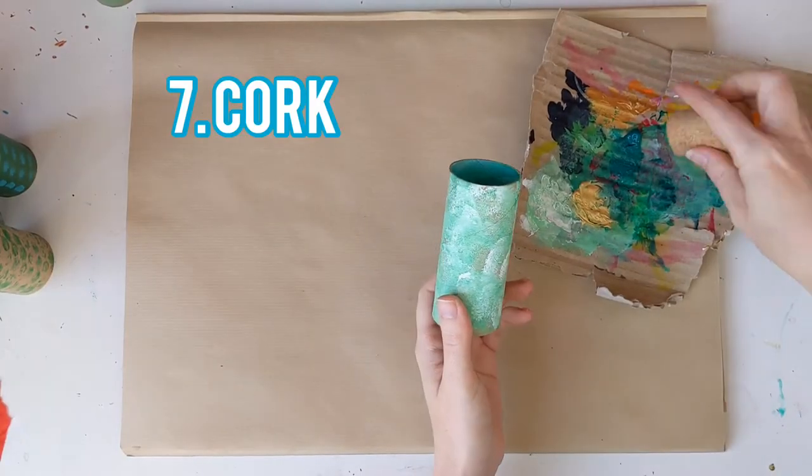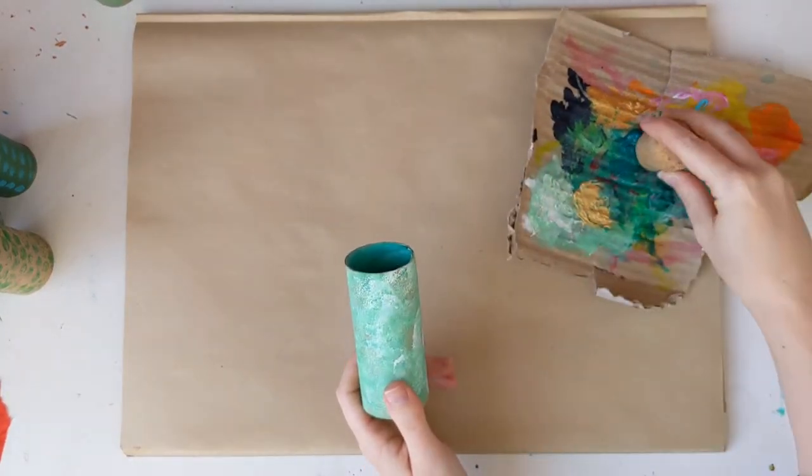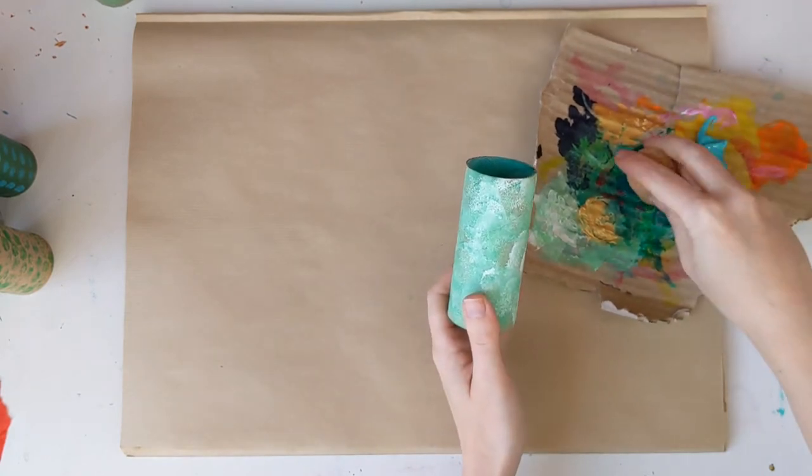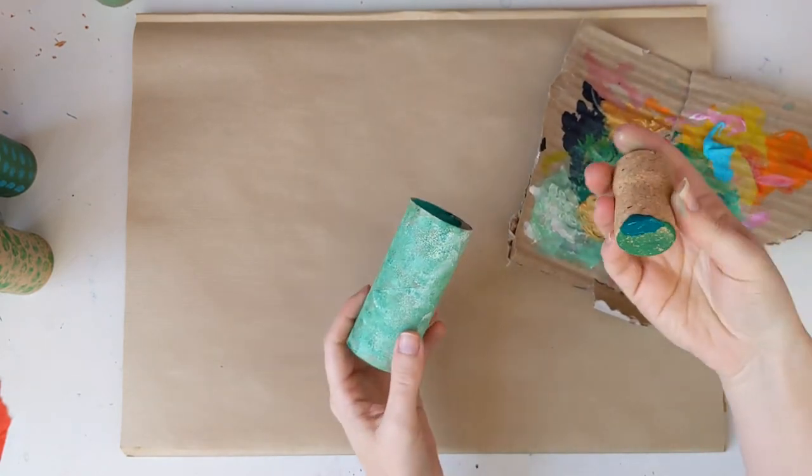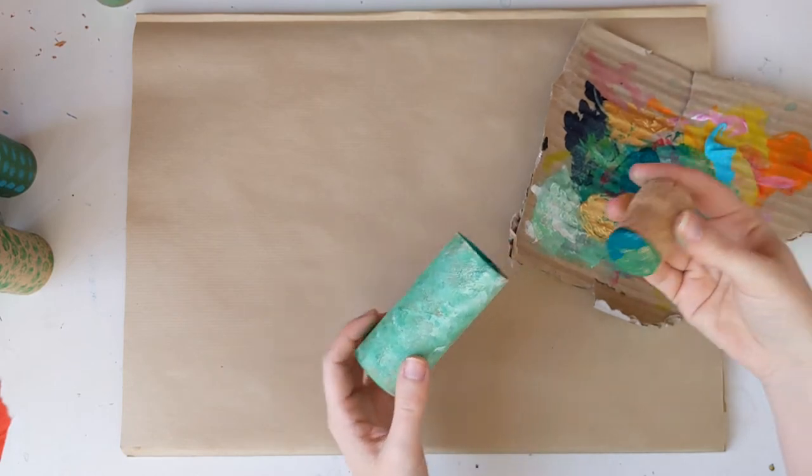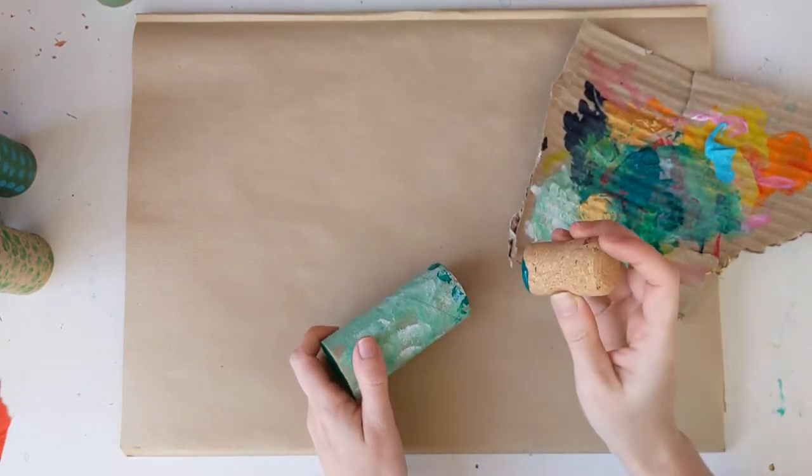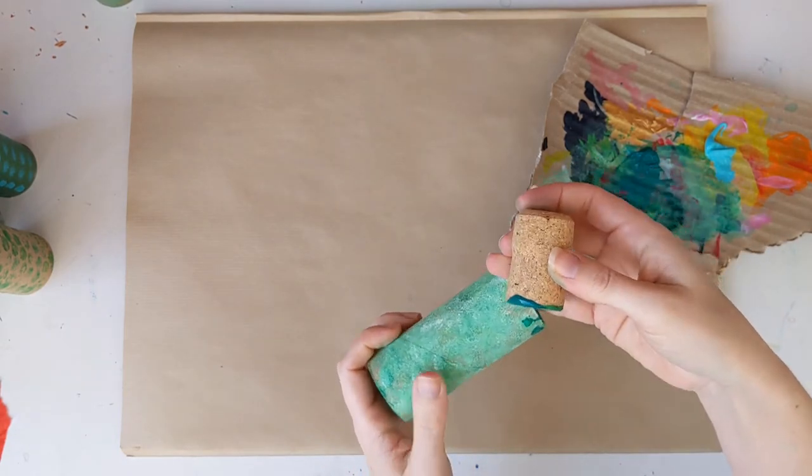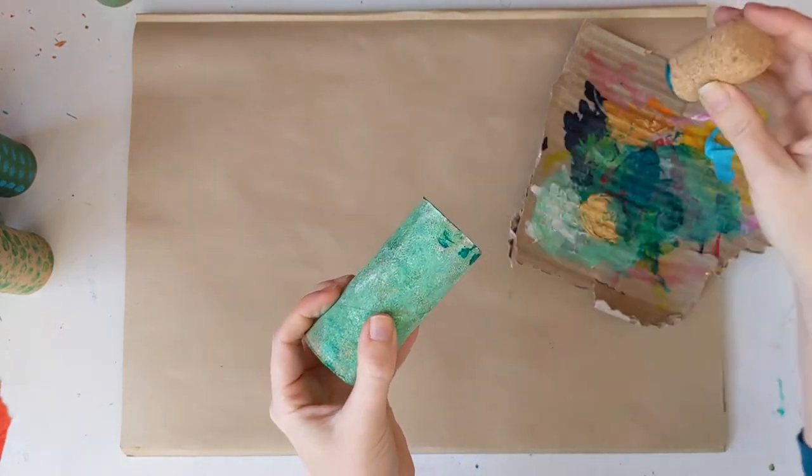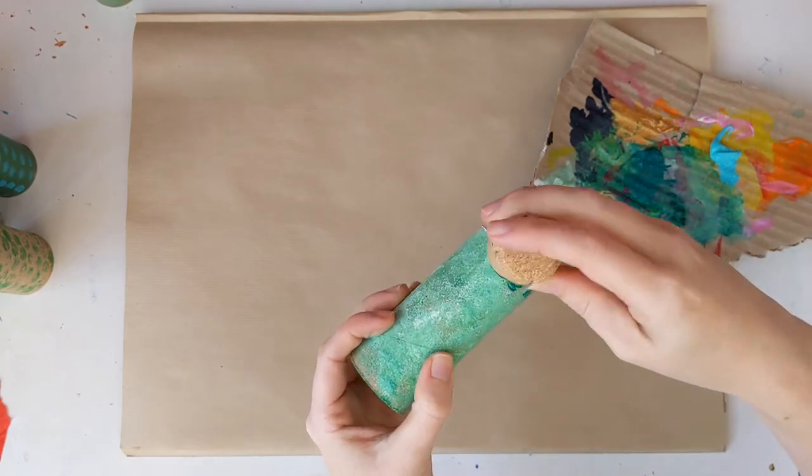Then I got a bit more wacky and decided to use this cork from a bottle and just sort of dunked it in the paint and use the edge to make a scale shape. This kind of works. I quite like it but it does take a little bit of time. And you also get quite covered in paint while you're doing it.